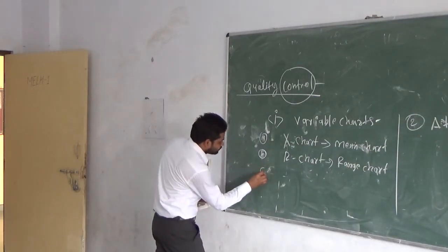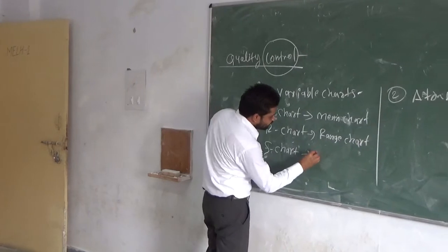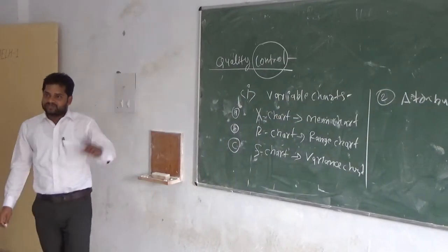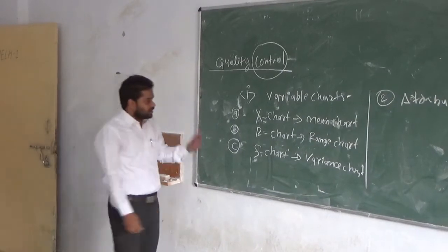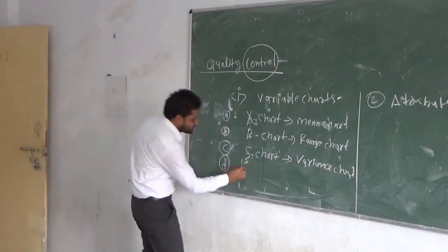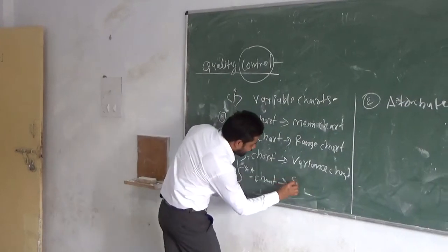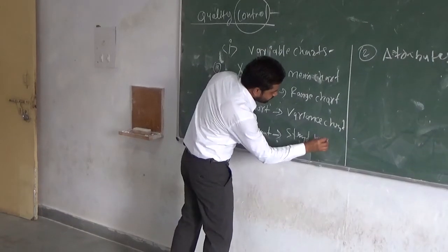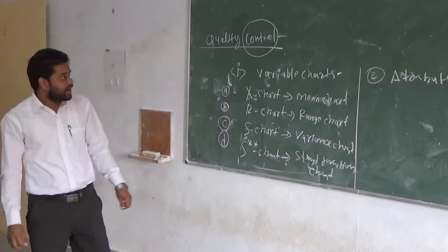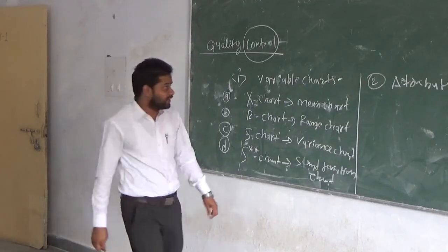Another one — the third — is the S chart, which is a variance chart. And another one is the S double chart, which is the standard deviation chart. We calculate the standard deviation chart. So with a variable chart, we can solve the problem and achieve the quality.